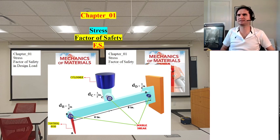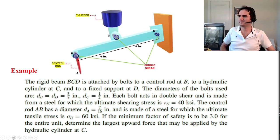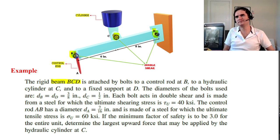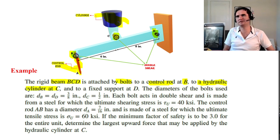We have a rigid beam BCD — that's B, C, D — attached by bolts to a control rod at B, and also to a hydraulic cylinder at C, and also attached to a fixed support at D.